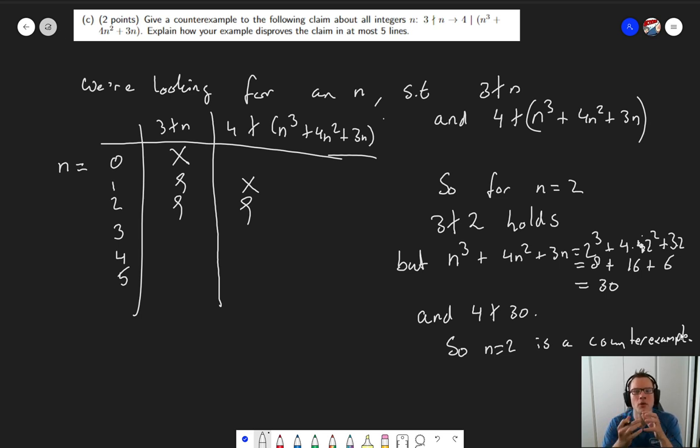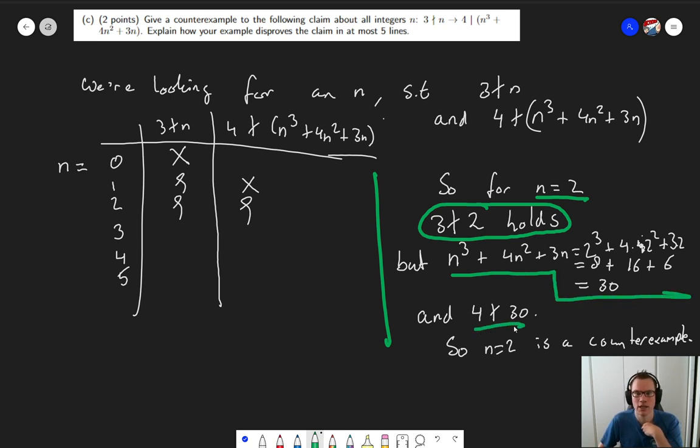So in an answer like this, what I'm looking for is not necessarily such a table or anything. I don't necessarily want you to show me how you came up with the counter example. It's nice if you do because it usually already gives you most of the explanation as to why it is a counter example. But you don't have to. What you should do is definitely include something like this. Explain to me what your counter example is. Mention or explain that the first part of the implication is true. And then show that the second part of the implication is false. So that we have a true implies false, meaning we have a counter example.